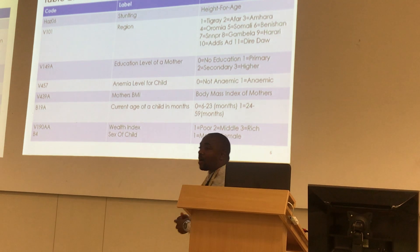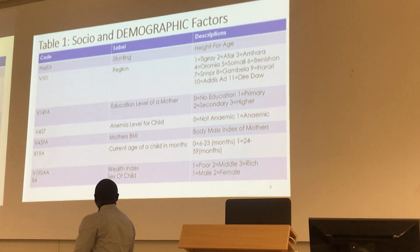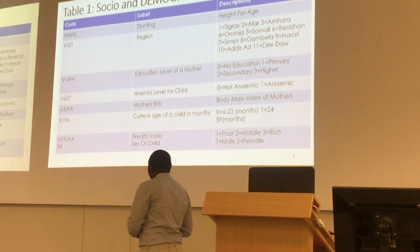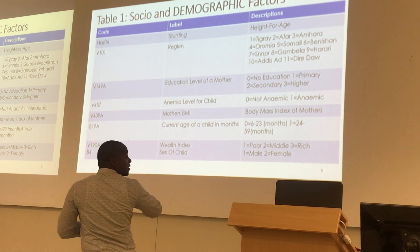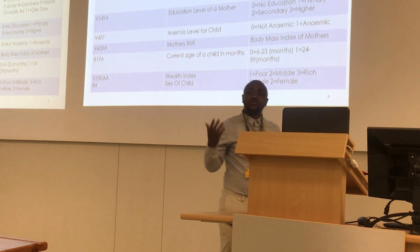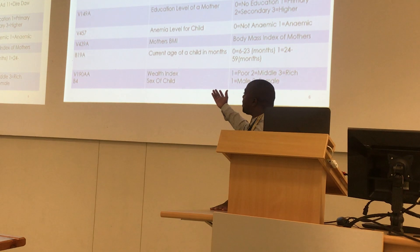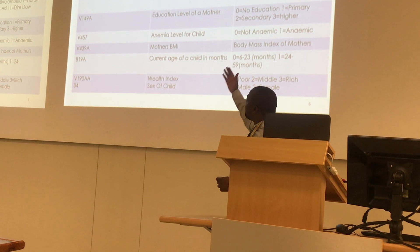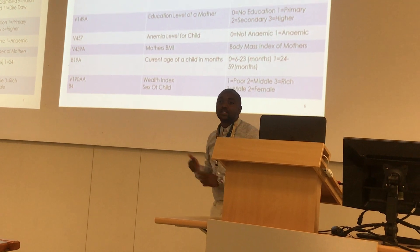These are my covariates: stunting status at the national level of the mother, stunting level of the child, the mother's body mass index, stunting age of the child, month, wealth index, and sex of the child. I selected these covariates based on extensive reading and research — in most research papers these variables were consistently identified as contributing to the body mass index of a child.